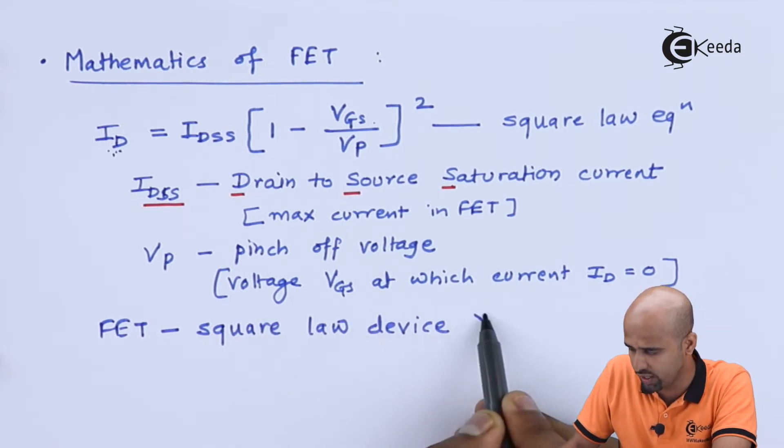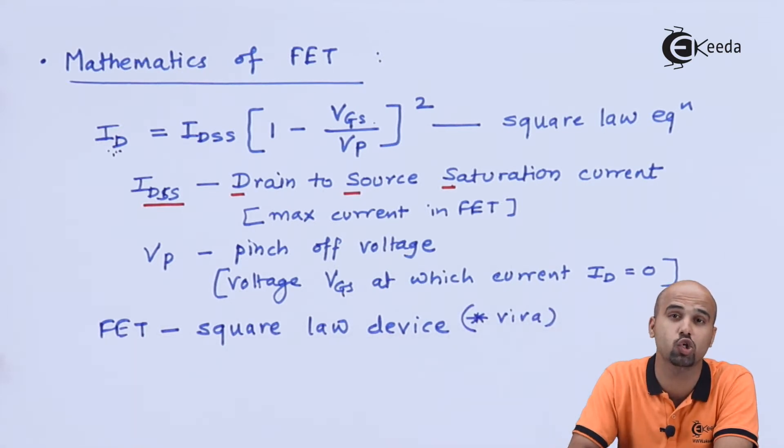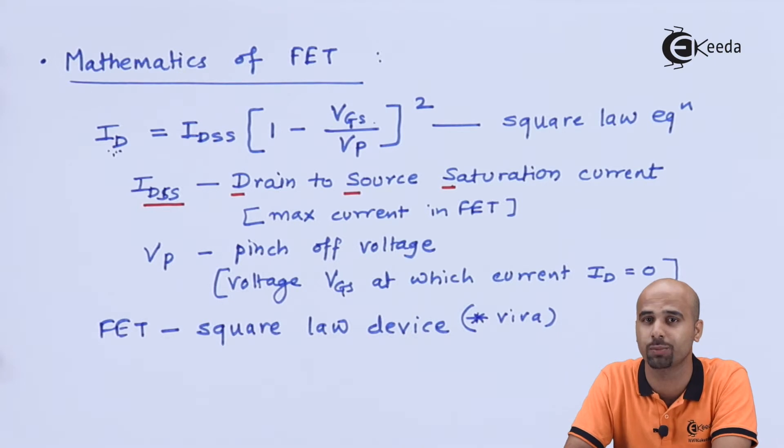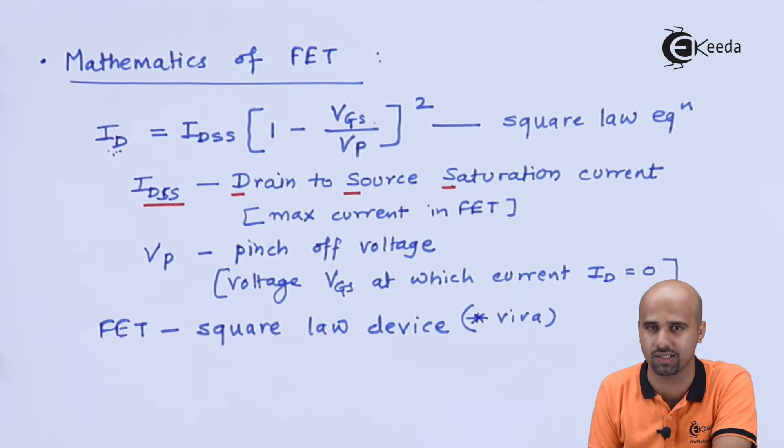In that whole process, I can say that ID is directly proportional to square of VGS and that is why this is called as square law equation. And that is why FET is turned out to be square law device. This is very very important for viva. Why FET is called as square law device?